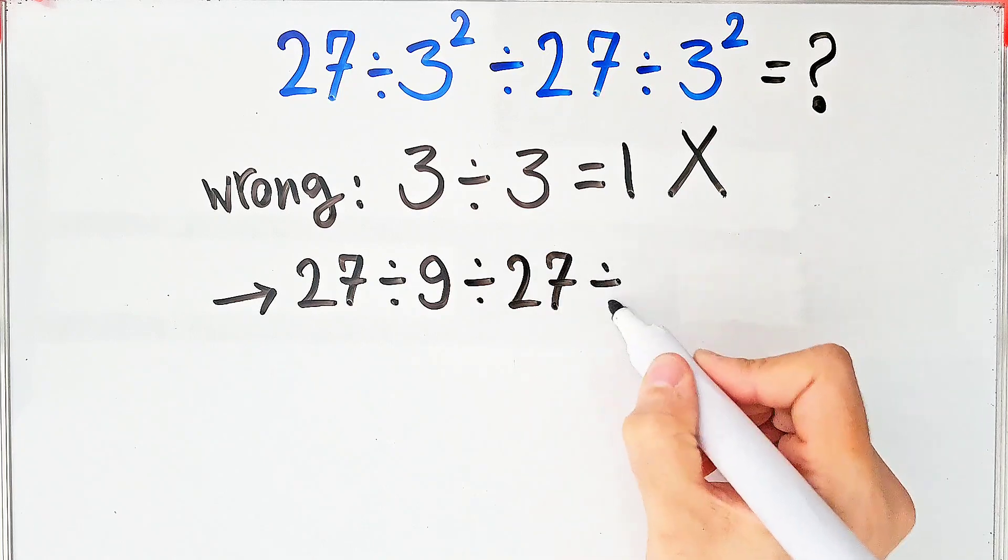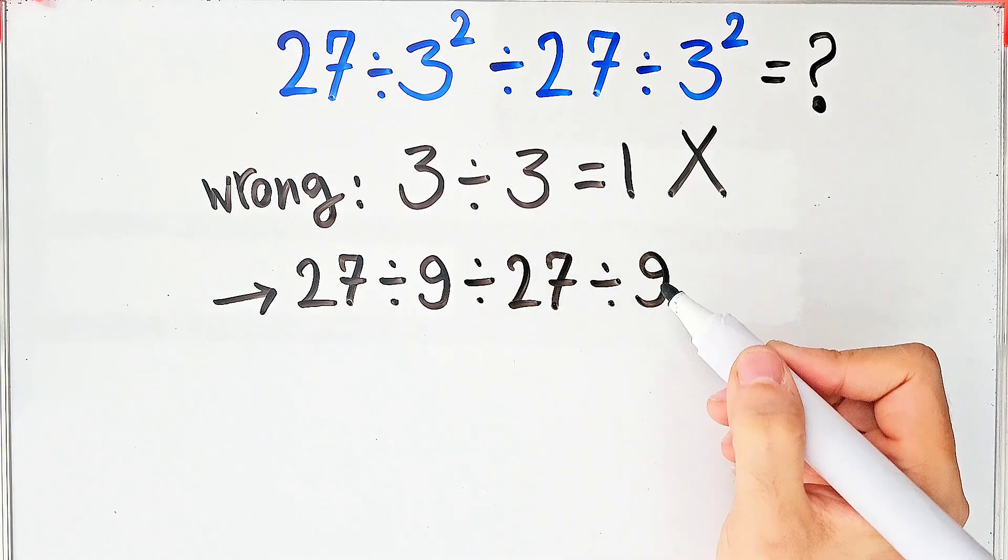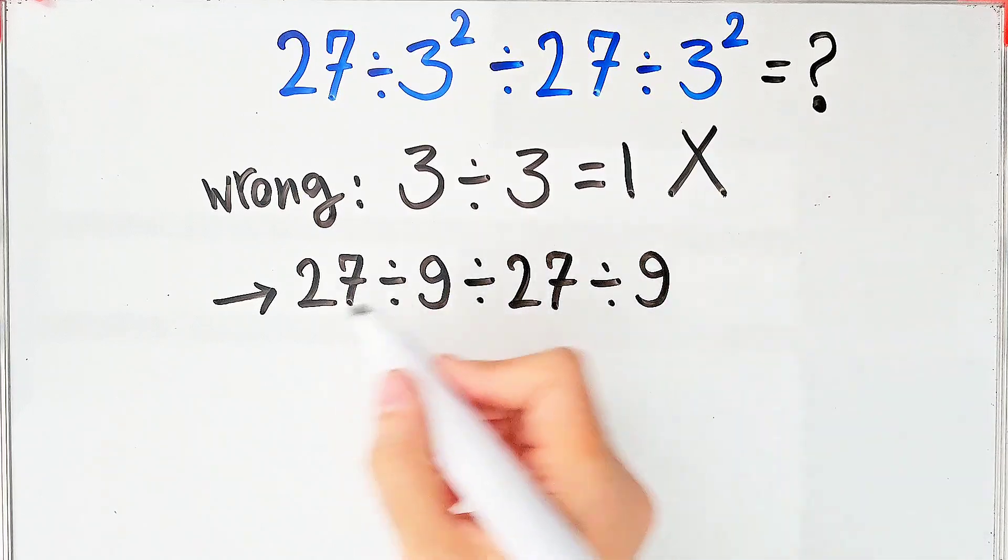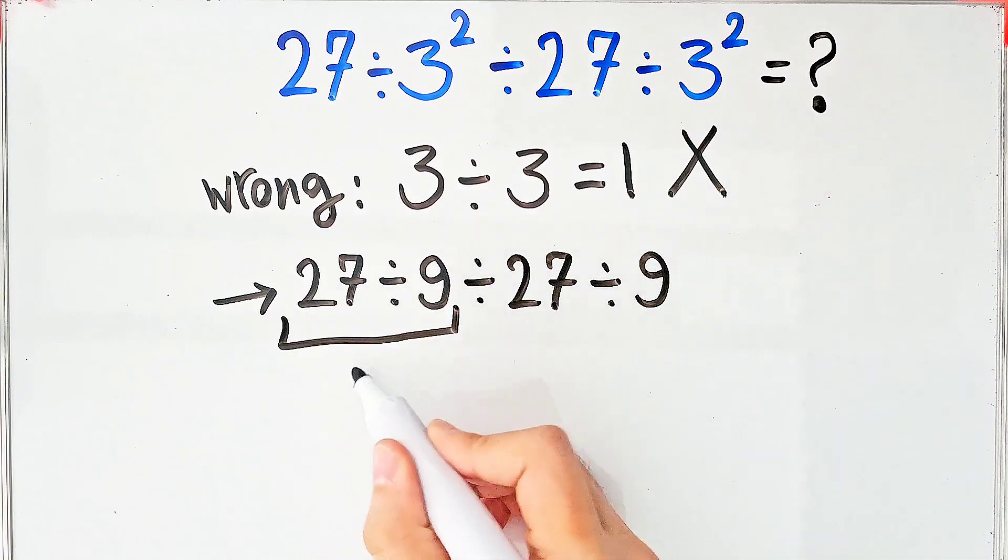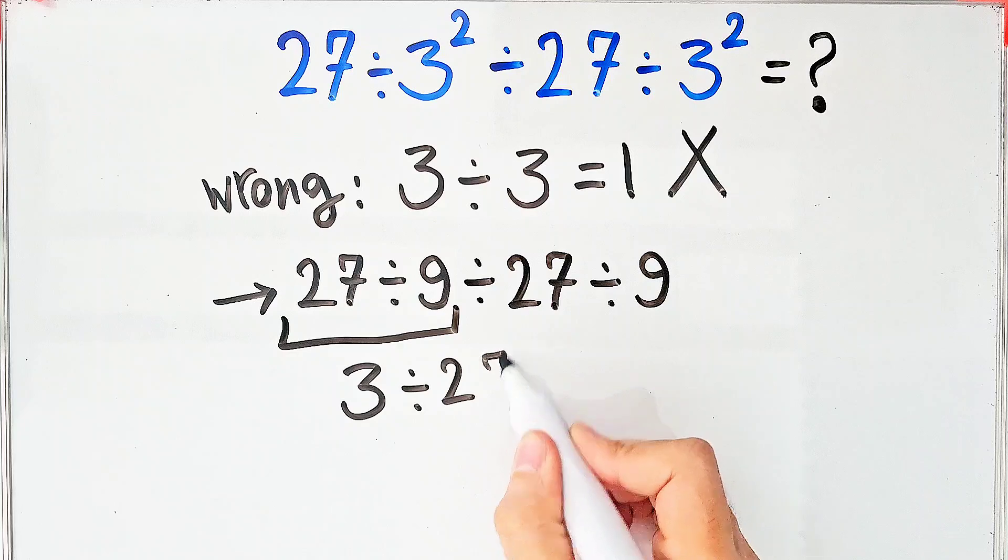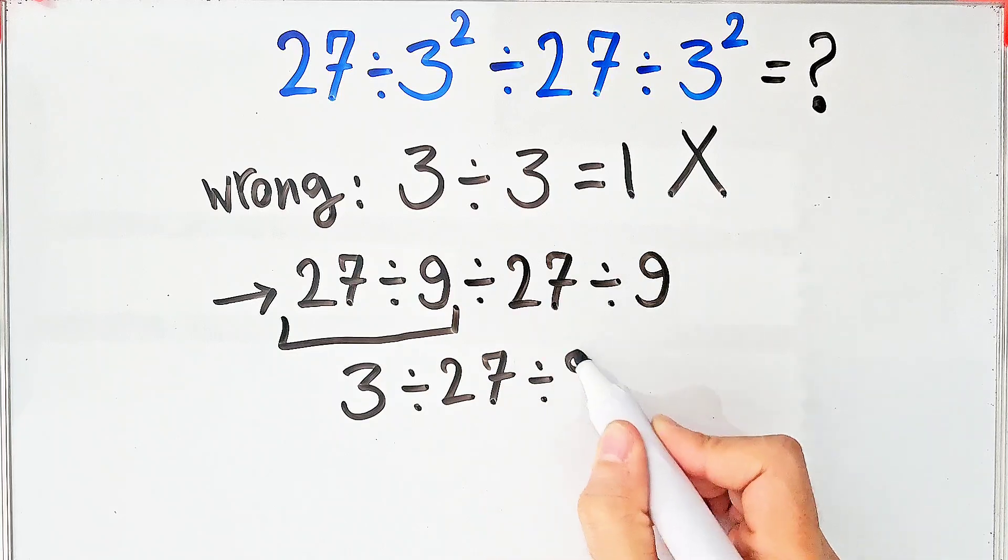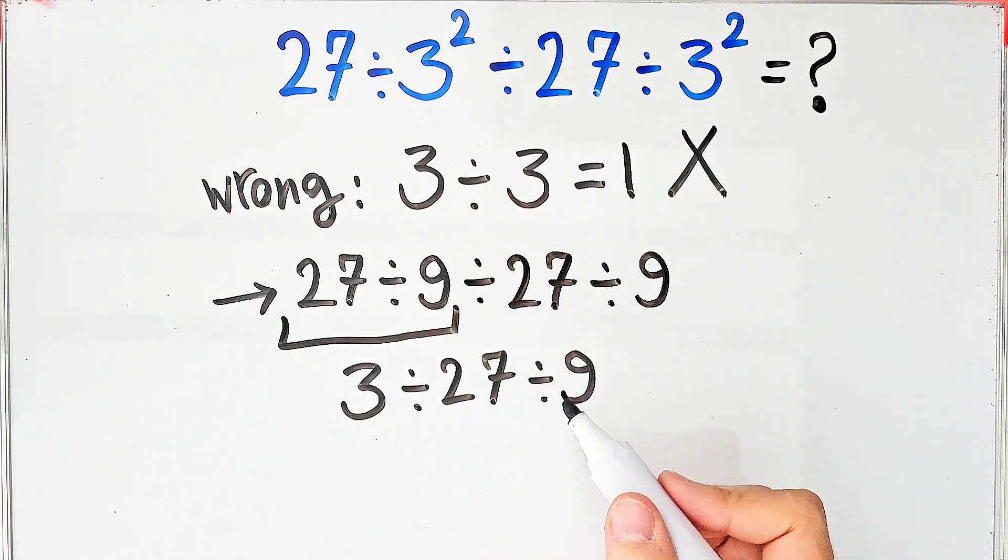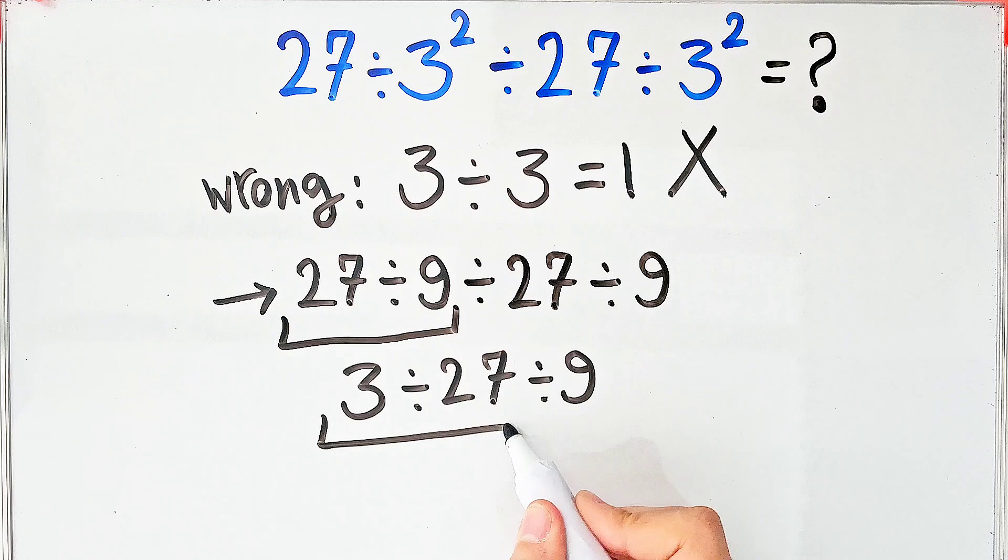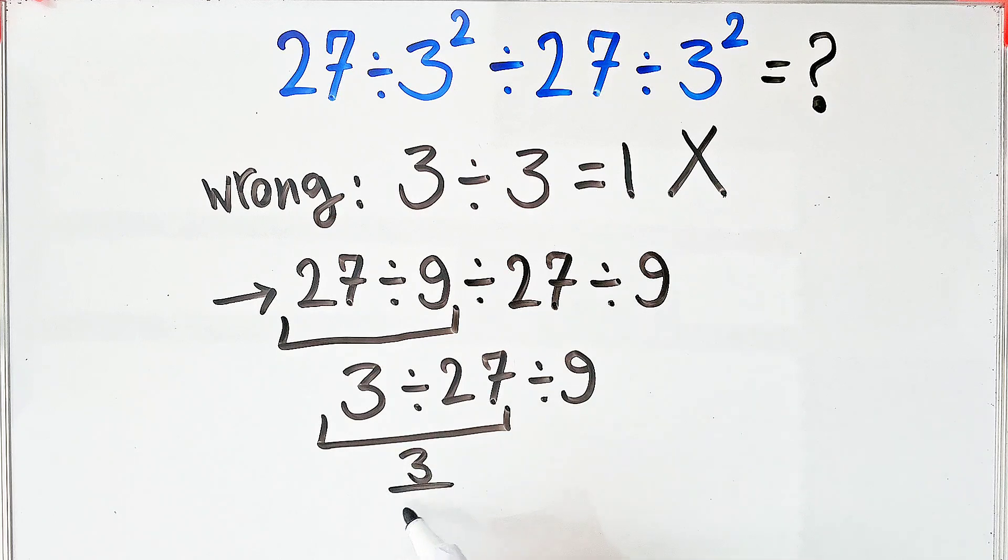We start from the left and simplify the question. 27 divided by 9 equals 3. Now we have 3 divided by 27, divided by 9. 3 divided by 27 equals 3 over 27. We have 3 over 27 divided by 9.